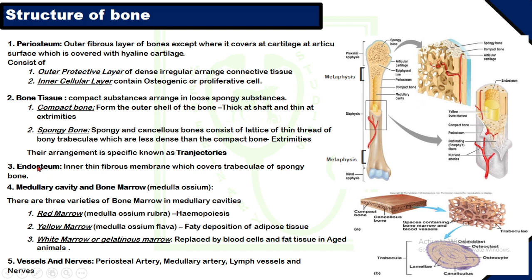The third structure is the endosteum — the inner thin fibrous membrane which covers the trabeculae of spongy bone. It also lines the marrow cavity spaces and the Haversian canals found inside the bone. The medullary cavity, or marrow cavity, is the central cavity found at the shaft of the bone where red marrow, yellow marrow, and white marrow are found.